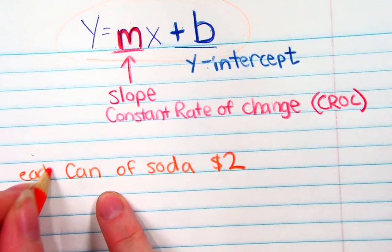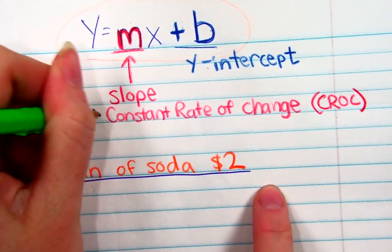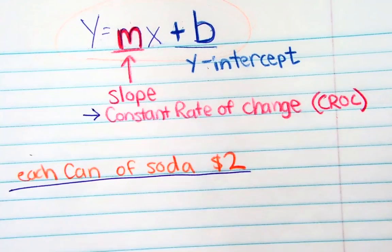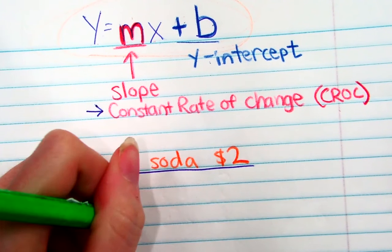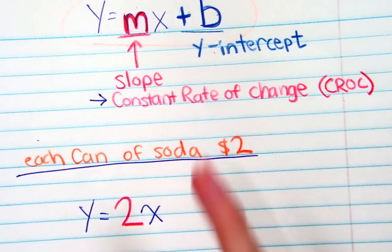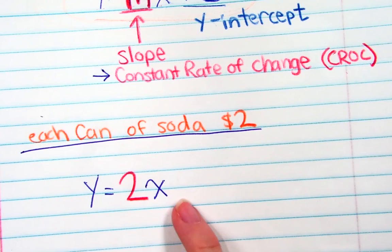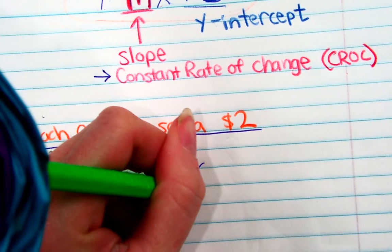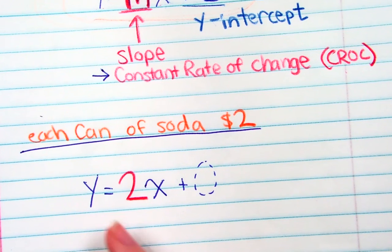If each can of soda costs $2, that is my constant rate of change. So my formula is y equals 2x. If I don't buy any cans of soda, I'm not going to have to pay any money, so I'm not adding anything after that — it's basically plus zero. A lot of times you won't even see it written. It's just y equals 2x.